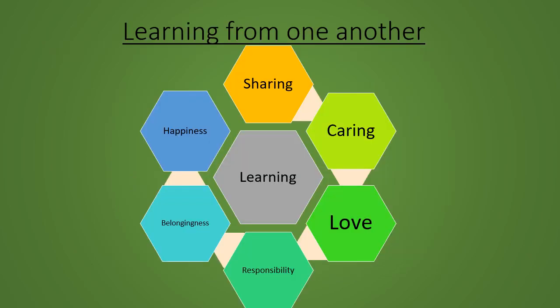We learn many things from one another, from our family members. Sharing — we learn sharing from our family members, like you share some things with your siblings. Caring — we learn caring from our elders, like your mother takes care of you and you take care of your younger sister or brother. Love — by sharing and caring, we learn to love each other. Responsibility — in family, we learn how to carry our responsibilities; if your mother gives you a task, you learn how to do it responsibly. Belongingness — to take care of your things that belong to you, like your books, toys, etc.